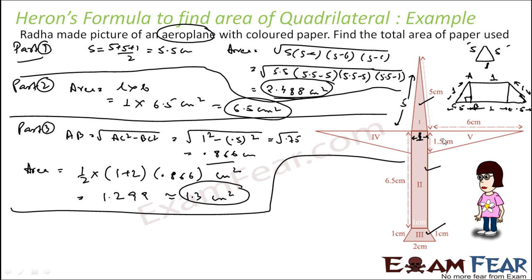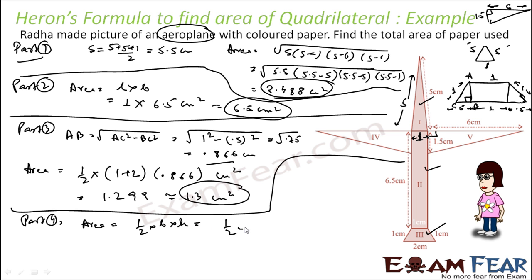Now we have to find the area of parts 4 and 5. Parts 4 and 5 are the same — both are right triangles. This side has 1.5 and this side has 6. So the area is (1/2) into base into height: (1/2) into 1.5 into 6, giving us 4.5 centimeter square. That is the area of part 4.